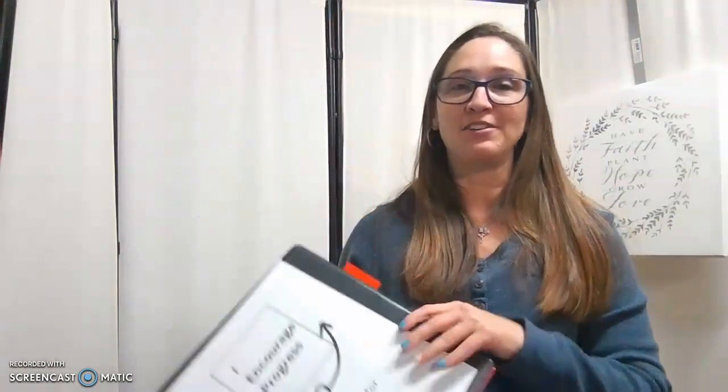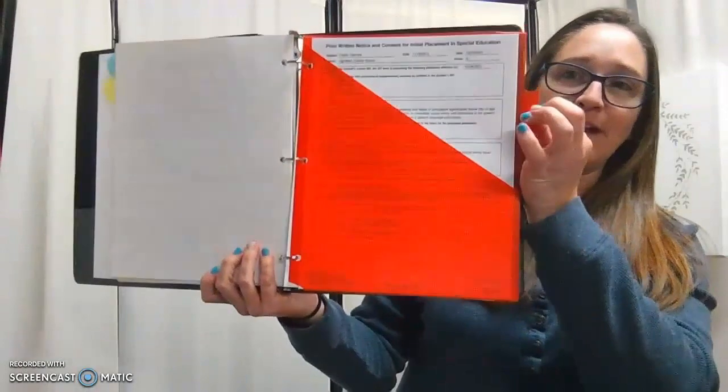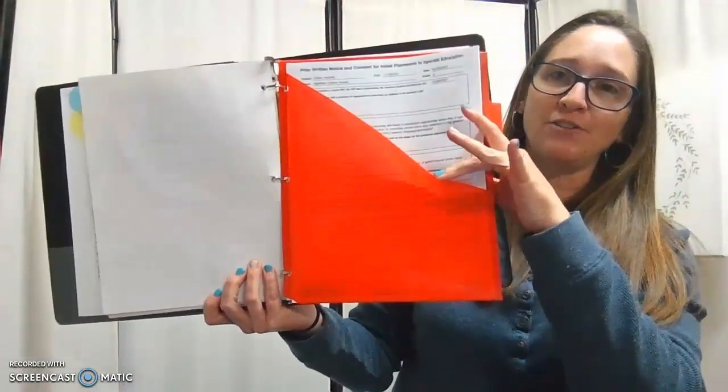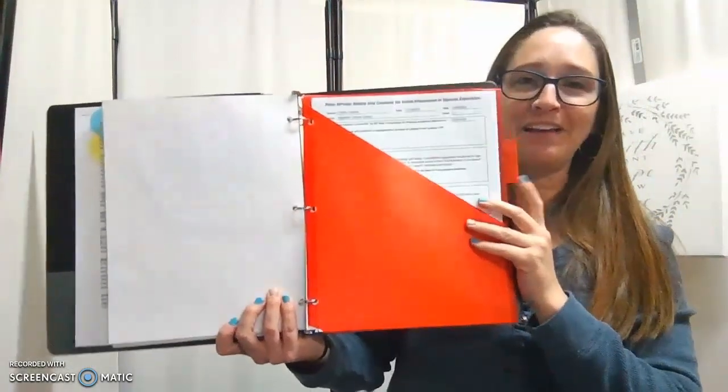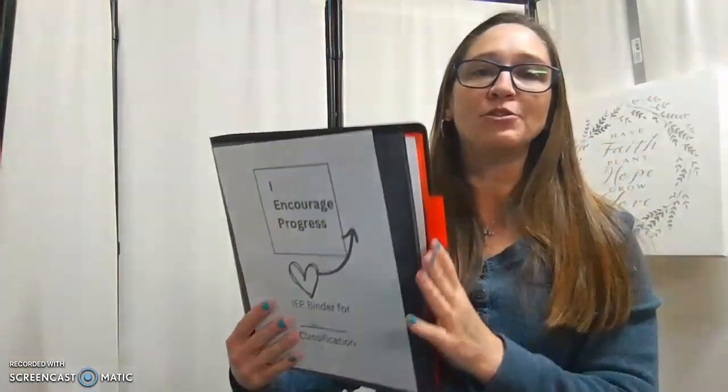Next thing you're going to need are some divider tabs. I personally like these tabs that have the tab on one side and the double pocket, so there's a pocket on both sides, and I will show you why I like those ones the best. There are 12 sections in what I'm presenting to you today. You may not need them all. So you'll notice that I have, I encourage progress written on all of my pages.